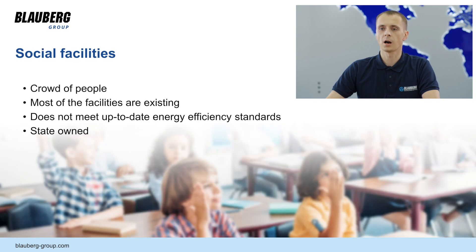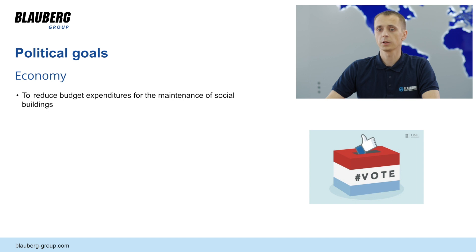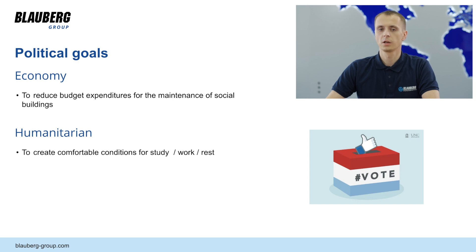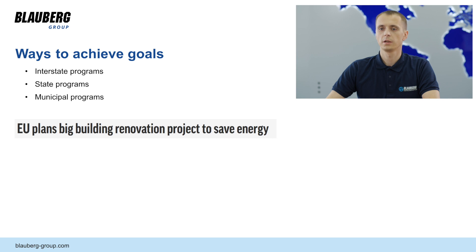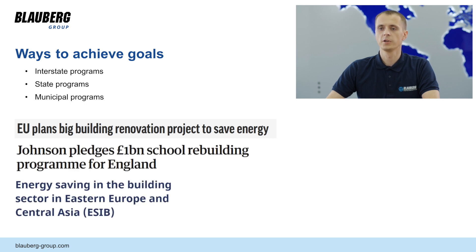Most social facilities are already in use, so not new. They often do not meet actual requirements for energy efficiency and are owned by municipal authorities. Their renewal is a political responsibility. There are a few goals: the economic goal of reducing the cost of maintaining premises and optimizing budget expenditures; the humanitarian goal of creating comfortable conditions for learning, working and resting; and reducing the carbon footprint and fighting COVID-19. Government programs at different levels already exist with the main goal of improving the energy efficiency of buildings, and we are ready to participate in these programs with our ventilation solution.